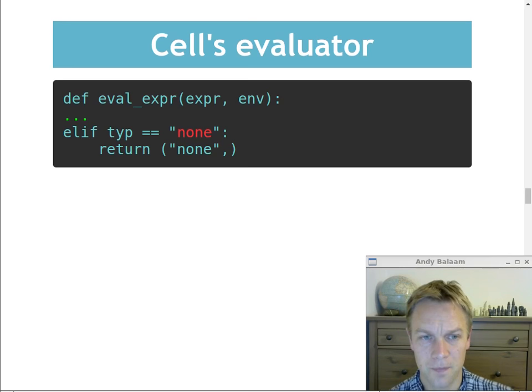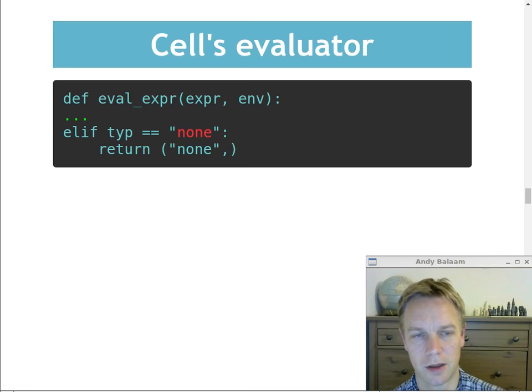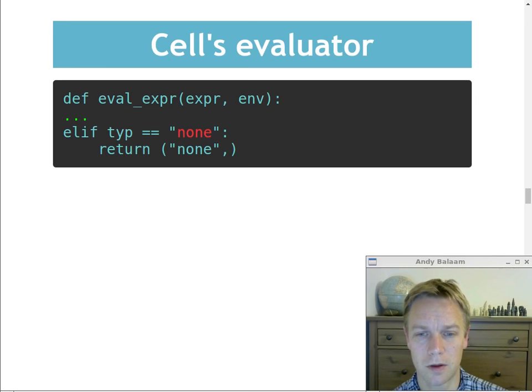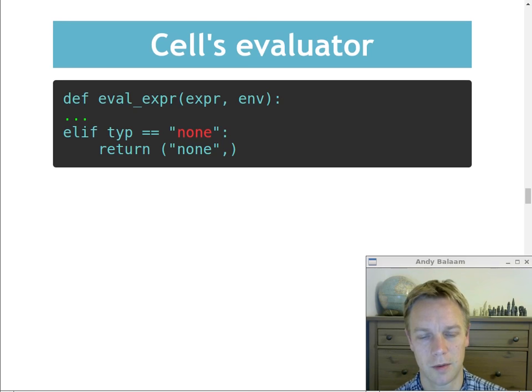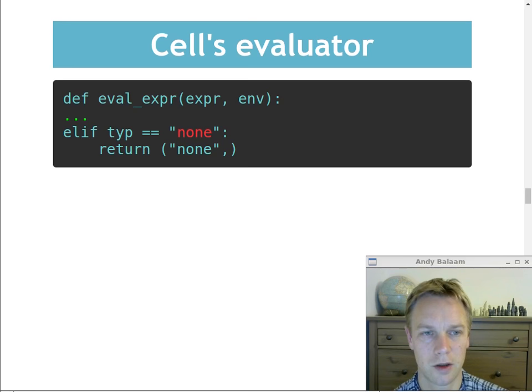CEL has a special value called None — like Python's None or null in other languages. There's a symbol None (capital N) inserted into the global environment, just like print and if. What gets stored there is a special value with type 'none' and no other entries. If you find a None in your syntax tree, you just return None.